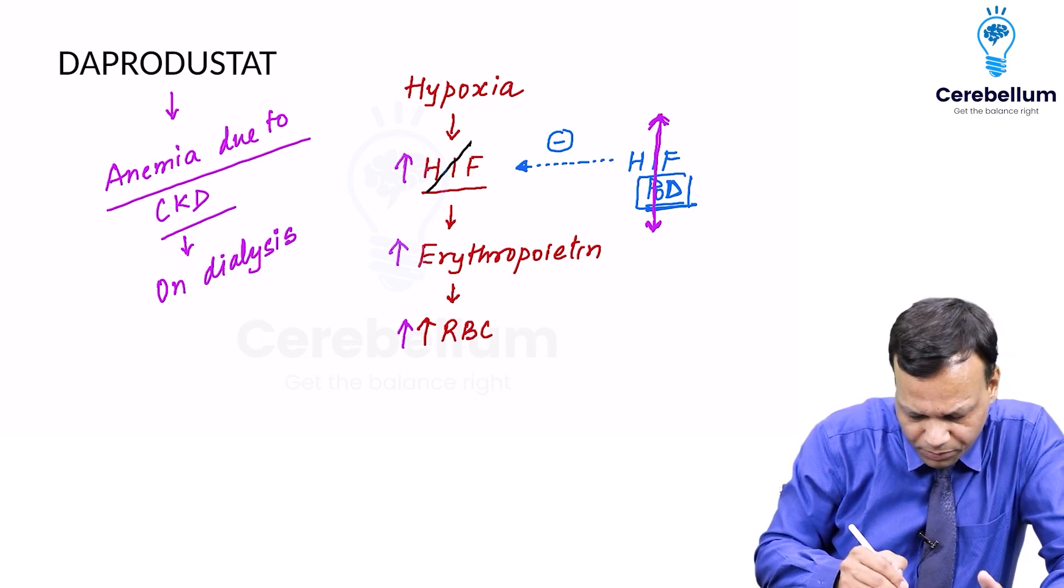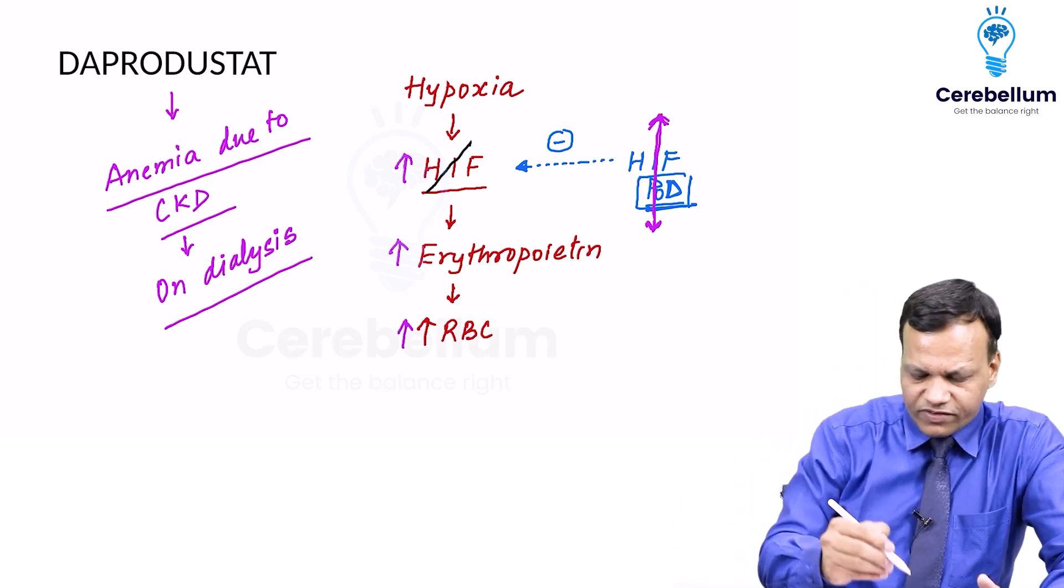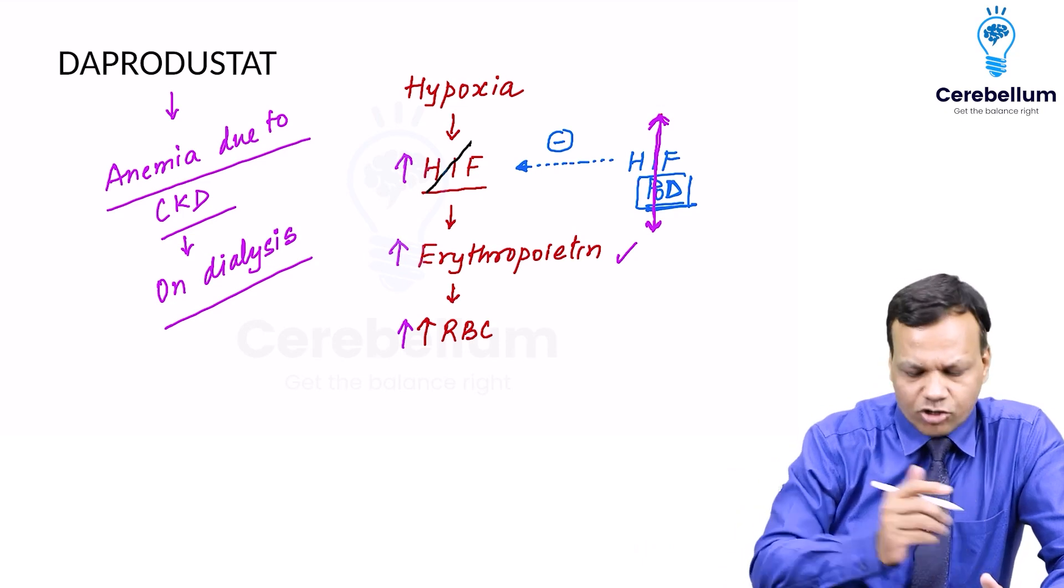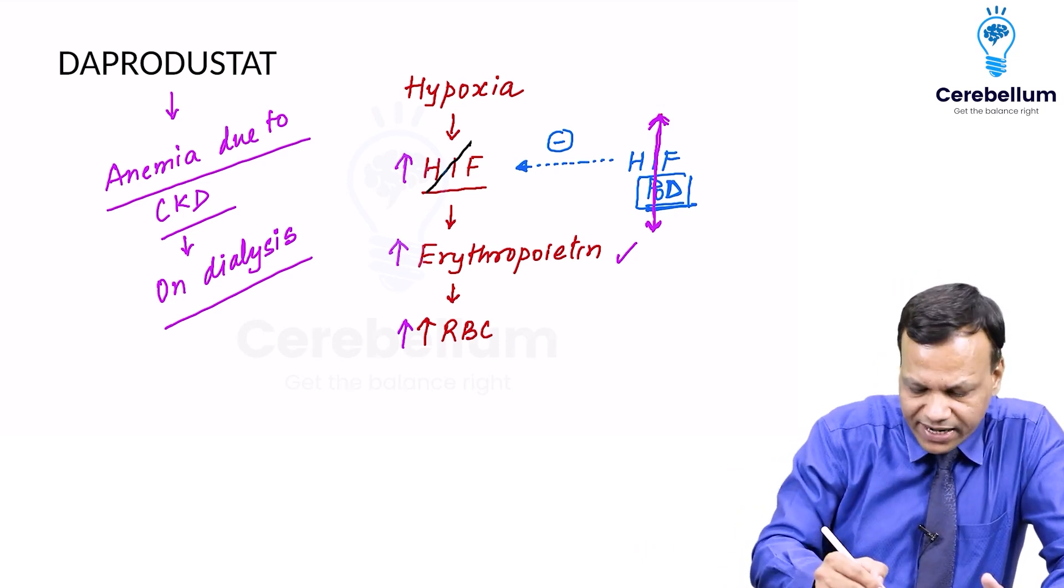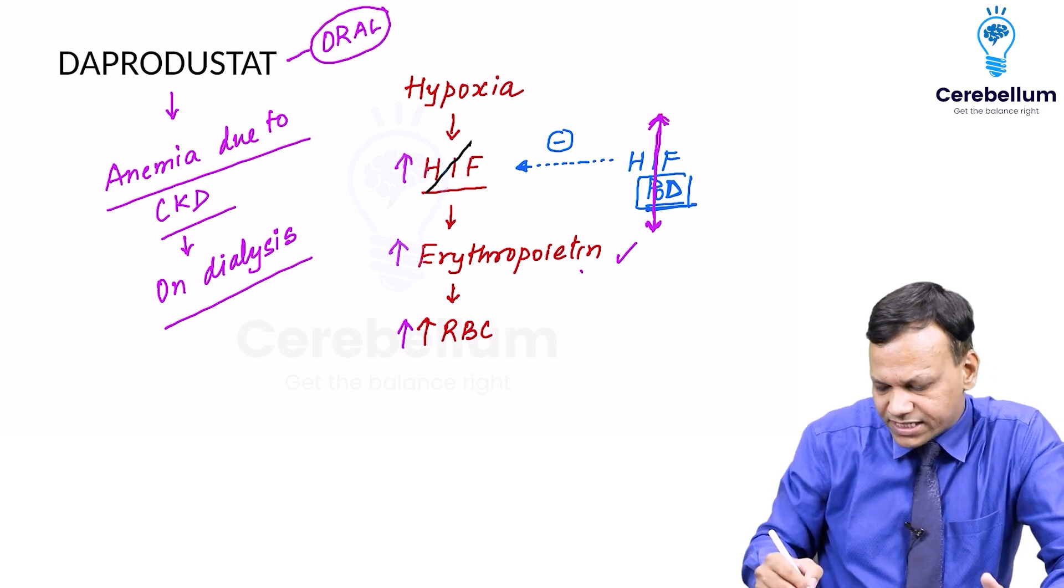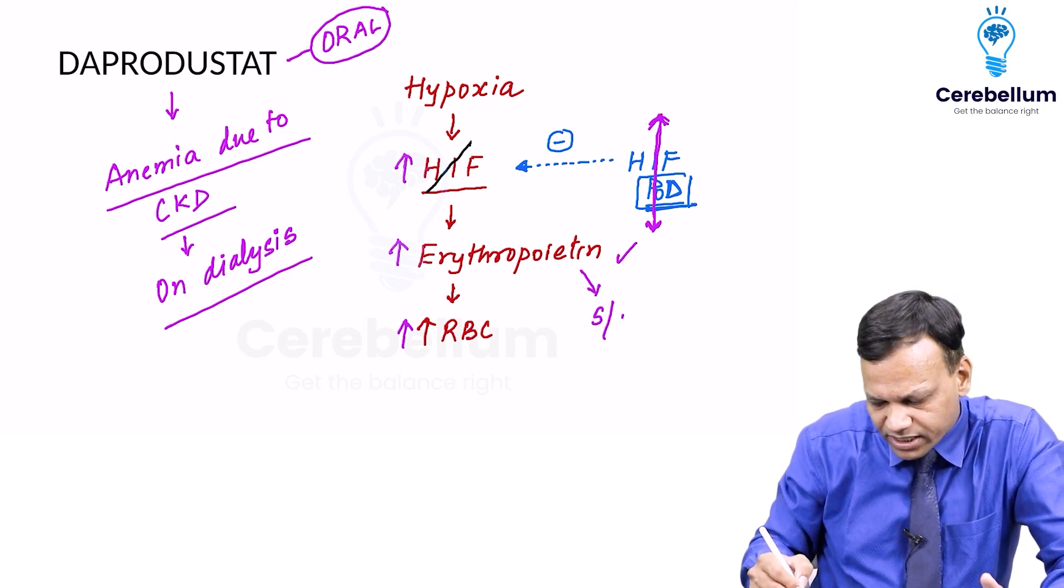It is approved for patients who are on dialysis instead of giving erythropoietin. Obviously, we can give erythropoietin, but instead of giving erythropoietin, we can give Daprodustat. The advantage of this is it can be given orally, whereas erythropoietin is injectable and is given by subcutaneous route.